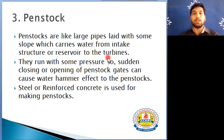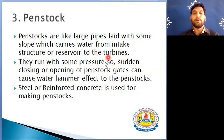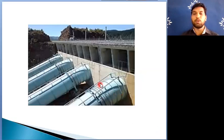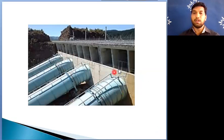To prevent the water hammer condition, we have to construct a surge tank. Steel and reinforced concrete are generally used for the manufacturing of penstocks. This is the image of penstocks — you can see these are larger diameter cylindrical pipes which convey water from the forebay or intake structure to the turbine.